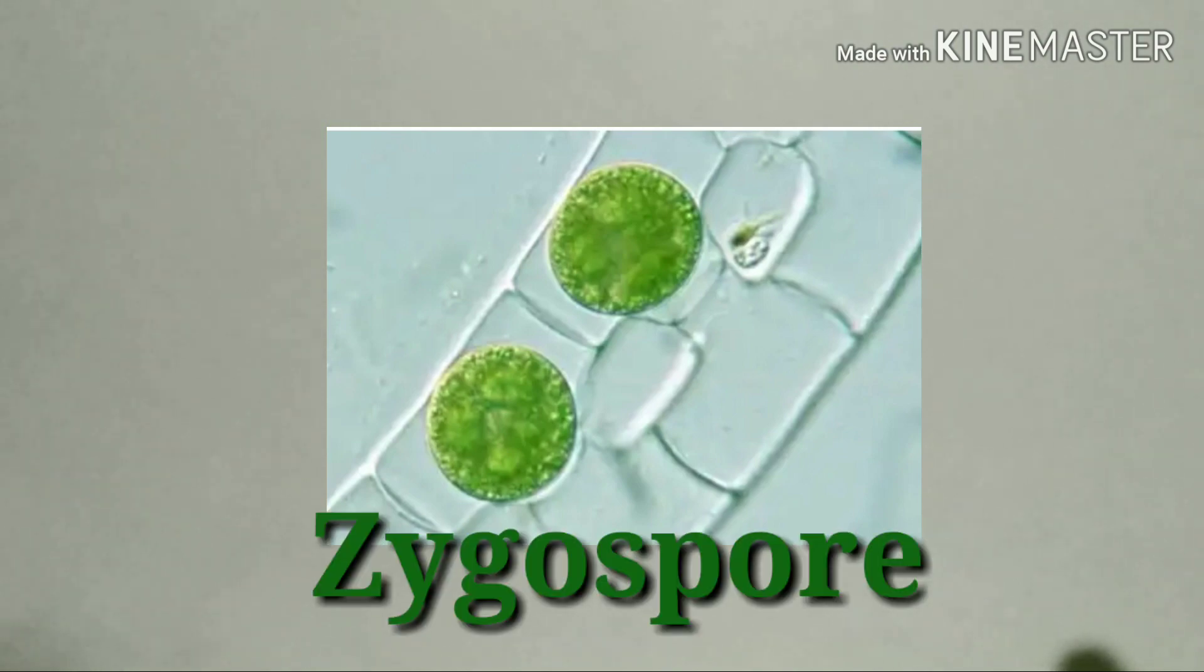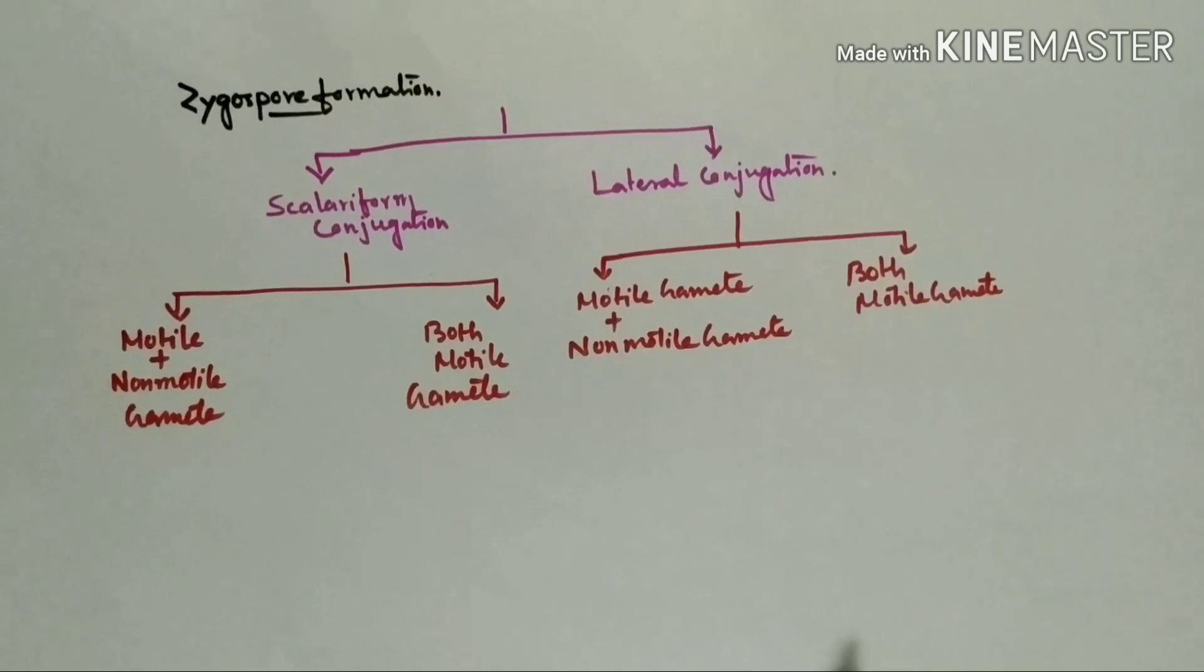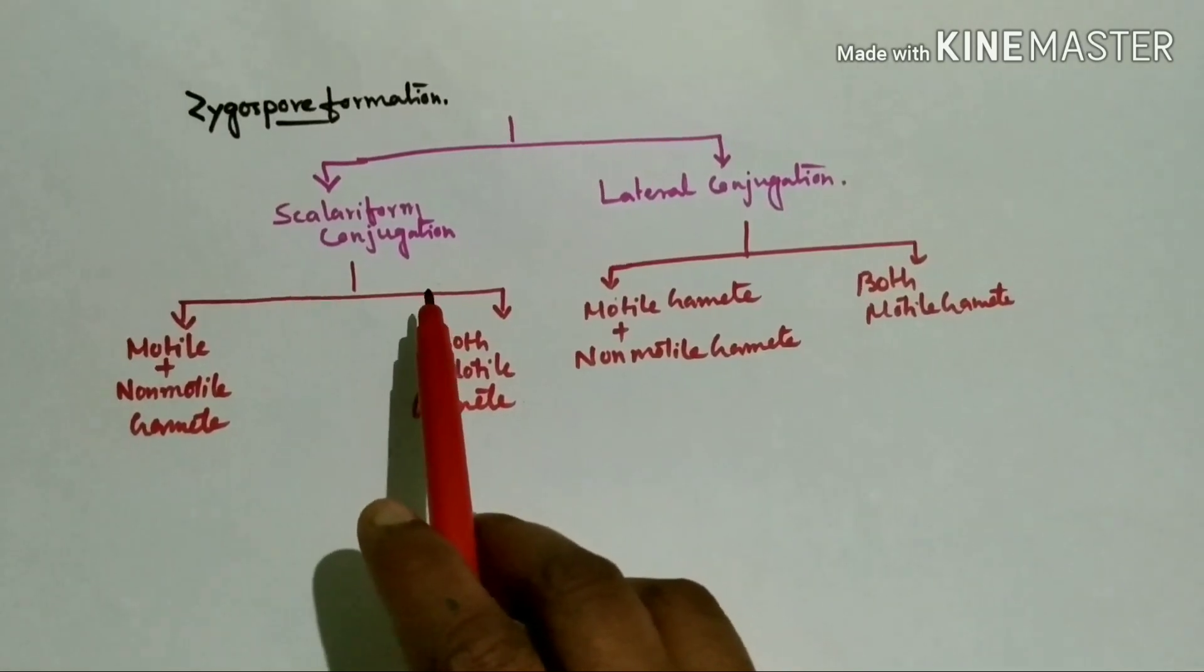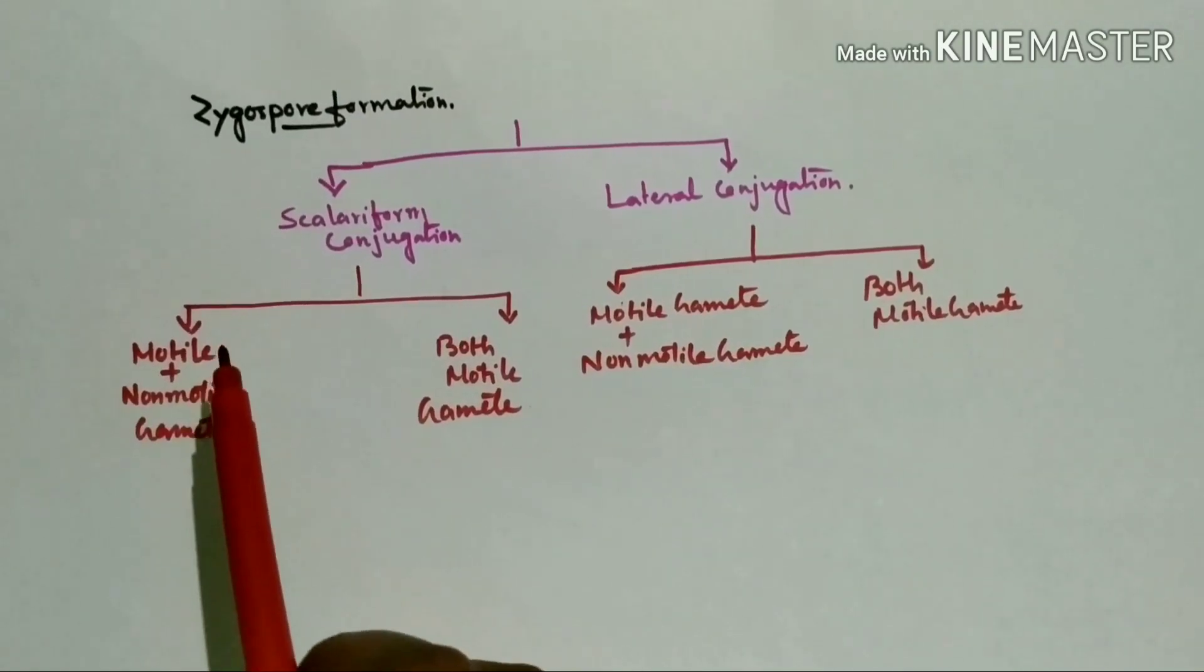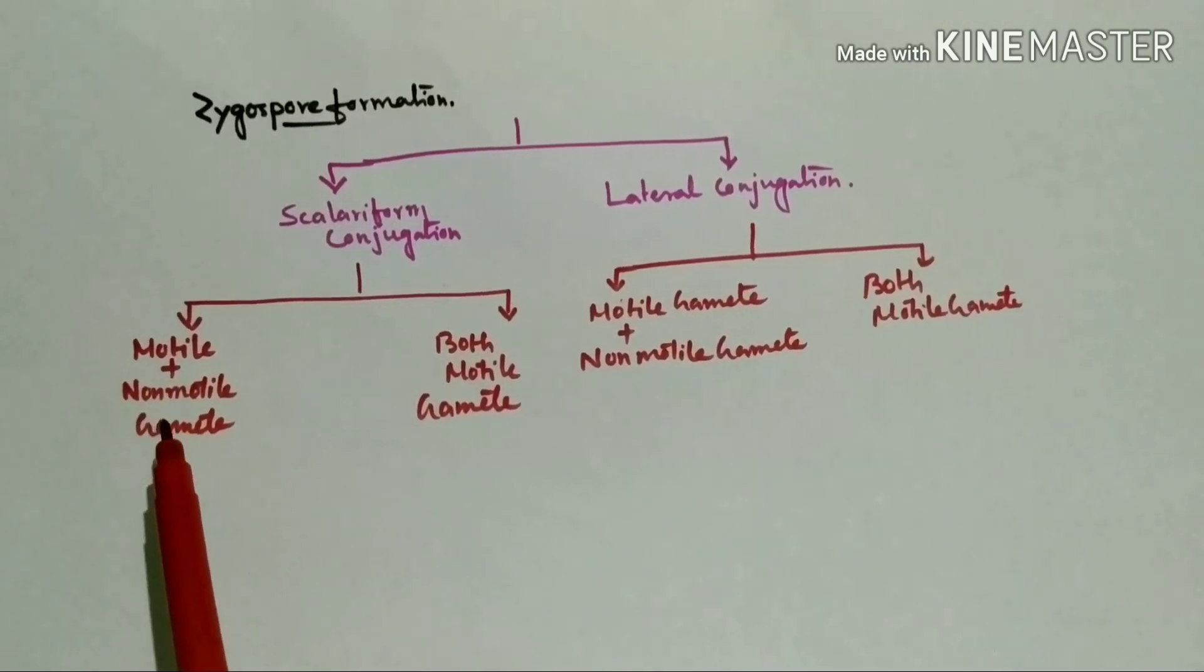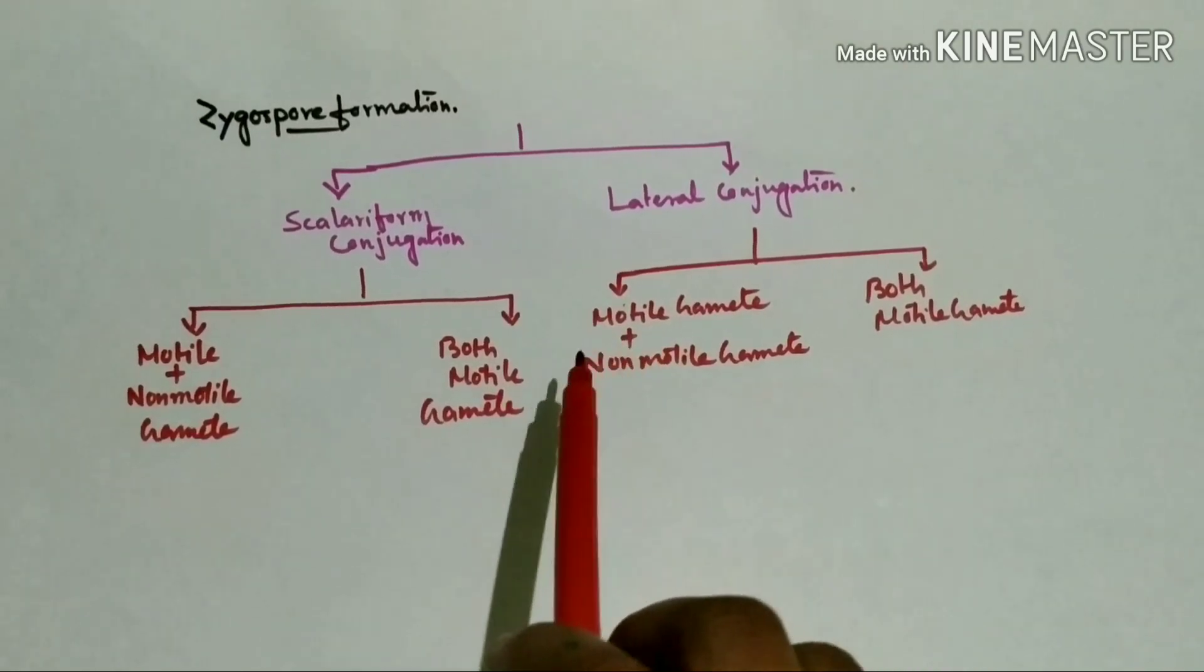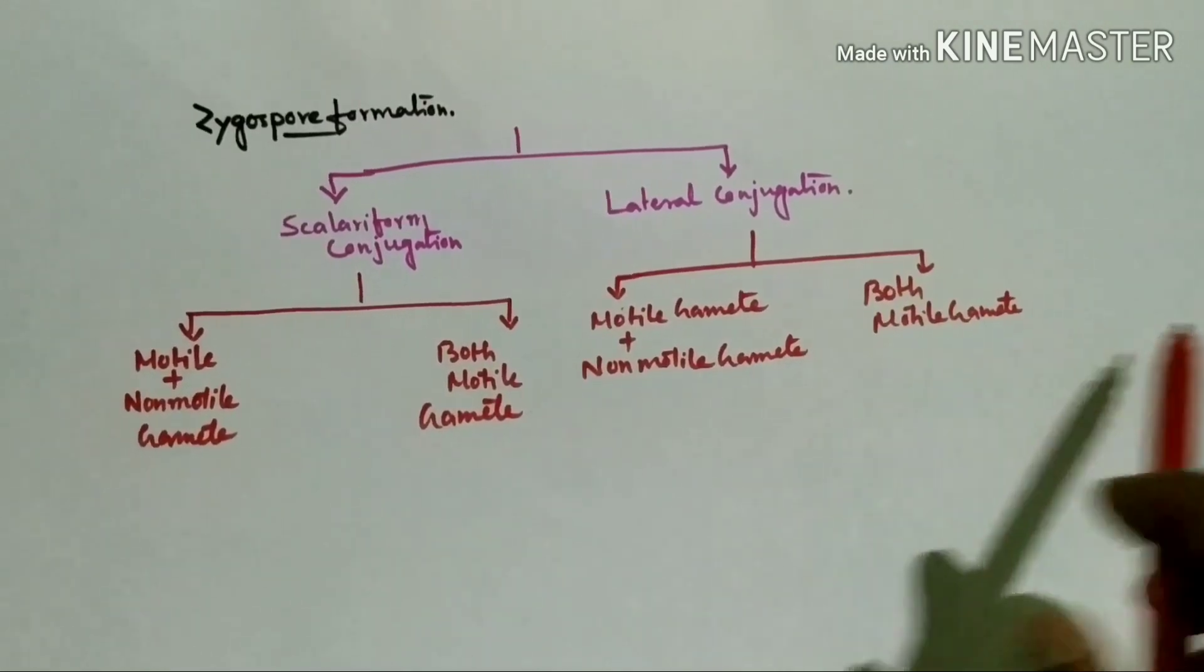Now zygospore formation: Here, scalariform conjugation tube formation and lateral conjugation tube formation. And here motile gamete and another gamete is non-motile gamete, and here both are motile. Here, same: one is motile gamete and another is non-motile gamete, and here both are motile.